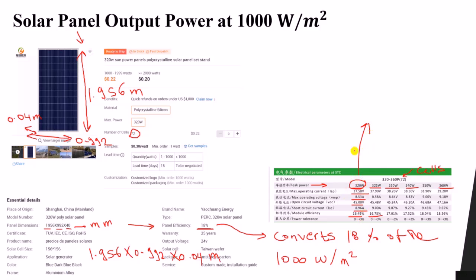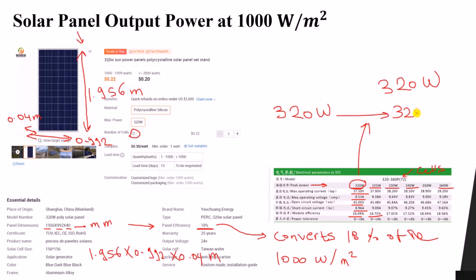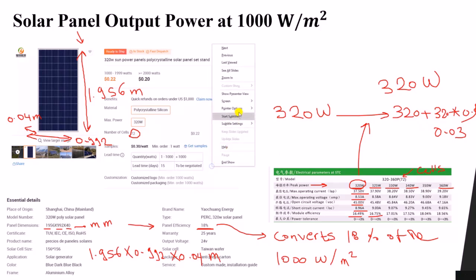The power tolerance is listed as 0 to +3%. This means that not all panels are exactly the same — there may be a small manufacturing error. So for a 320-watt panel, the actual power can range from 320 watts up to 320 plus 3% of 320 watts, which is a very small additional amount. The power will not be below the rated value, only potentially slightly above.